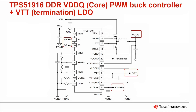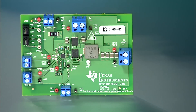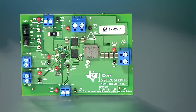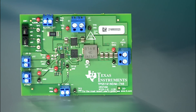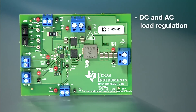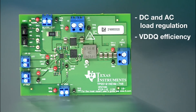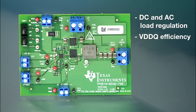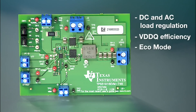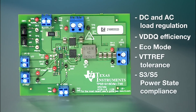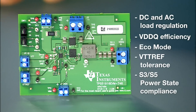For complete VTTQ core and VTT termination power solutions, TI offers a variety of options such as the TPS51916 in a 3x3 QFN package shown here. On this EVM you can test both the VTTQ buck converter and the VTT termination 2-ampere LDO for DC and AC load regulation, VTTQ efficiency including light load efficiency — the TPS51916 has echo mode operation — VTT REF tolerance, and S3-S5 power state compliance.